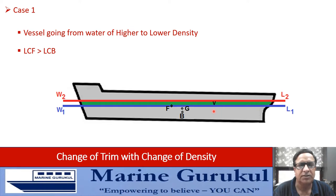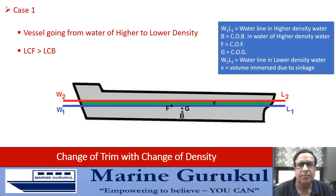In water of higher density, the volume of displacement was the underwater volume up to W1L1. In water of lower density, the volume of displacement is the underwater volume up to W2L2, which is the sum of the earlier underwater volume and the additionally immersed volume represented by small v. F is the center of flotation, G is the center of gravity, and small v is the volume immersed due to sinkage.